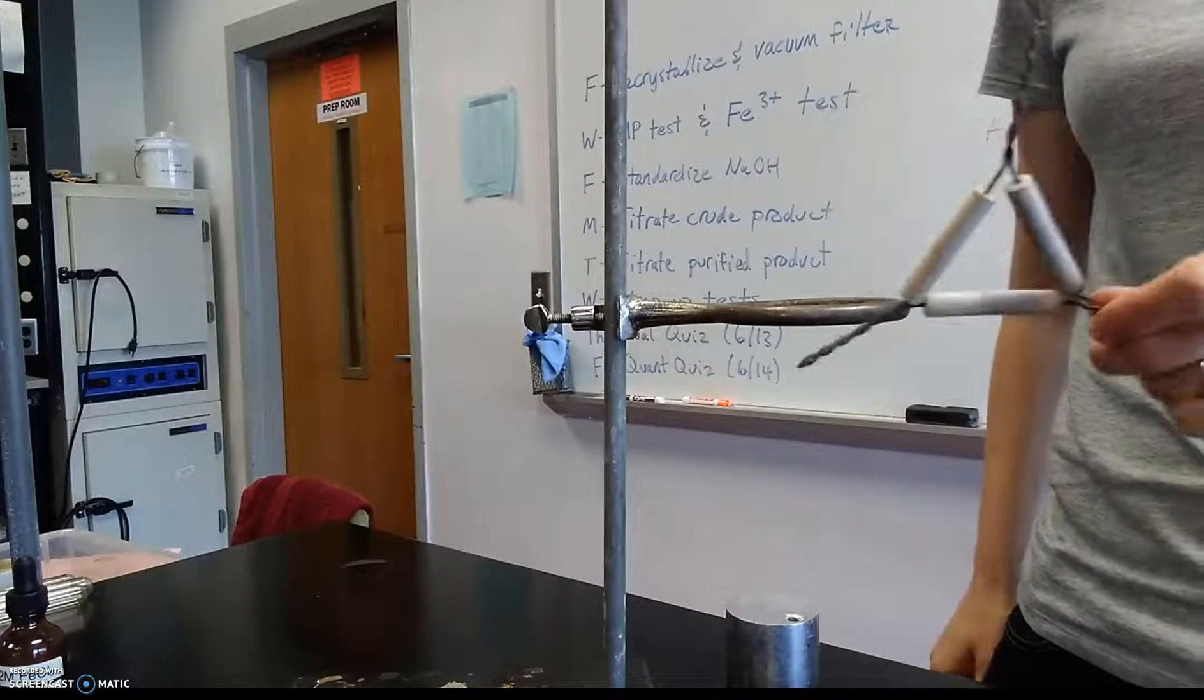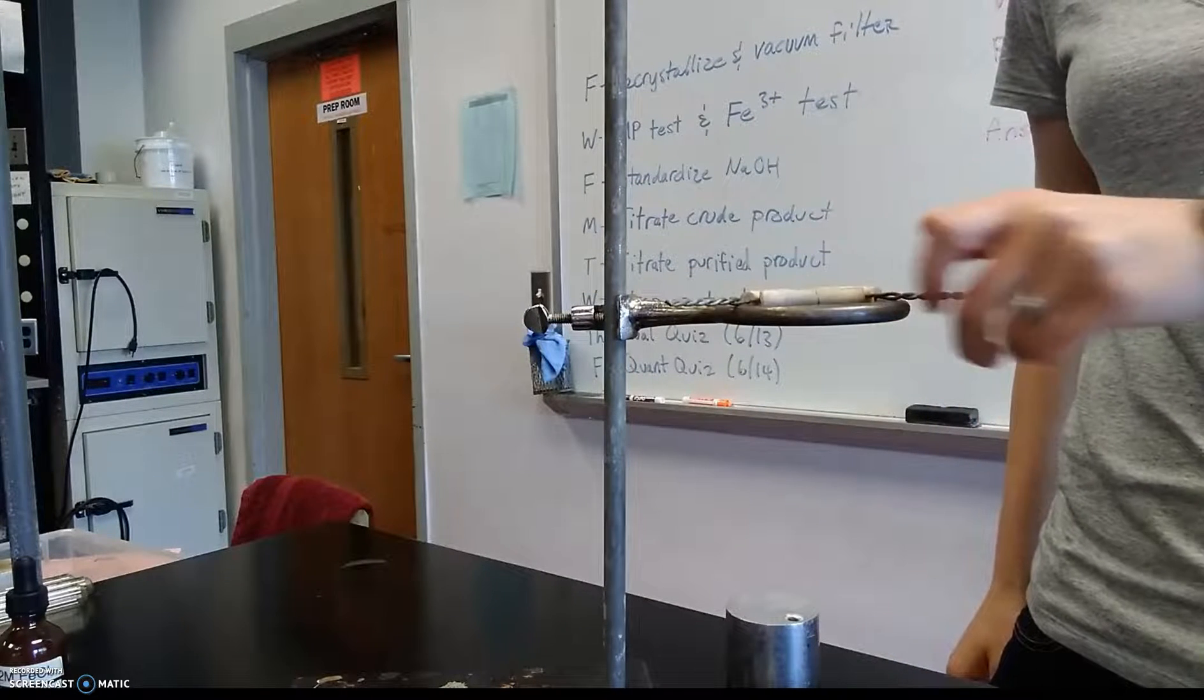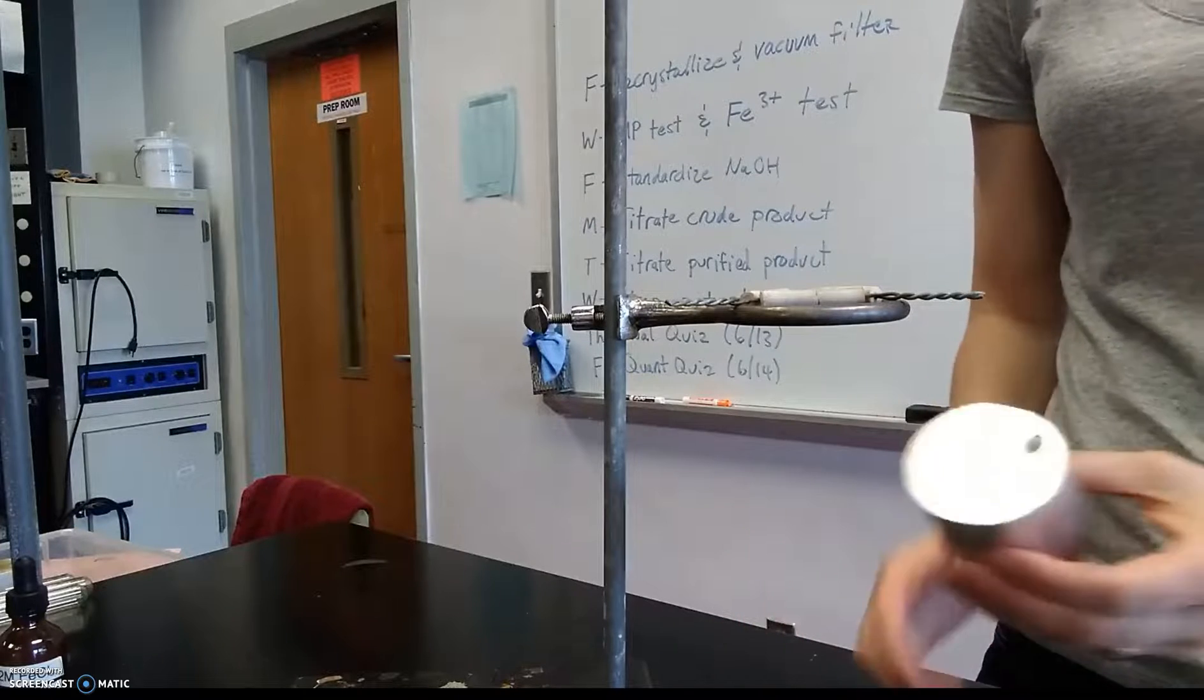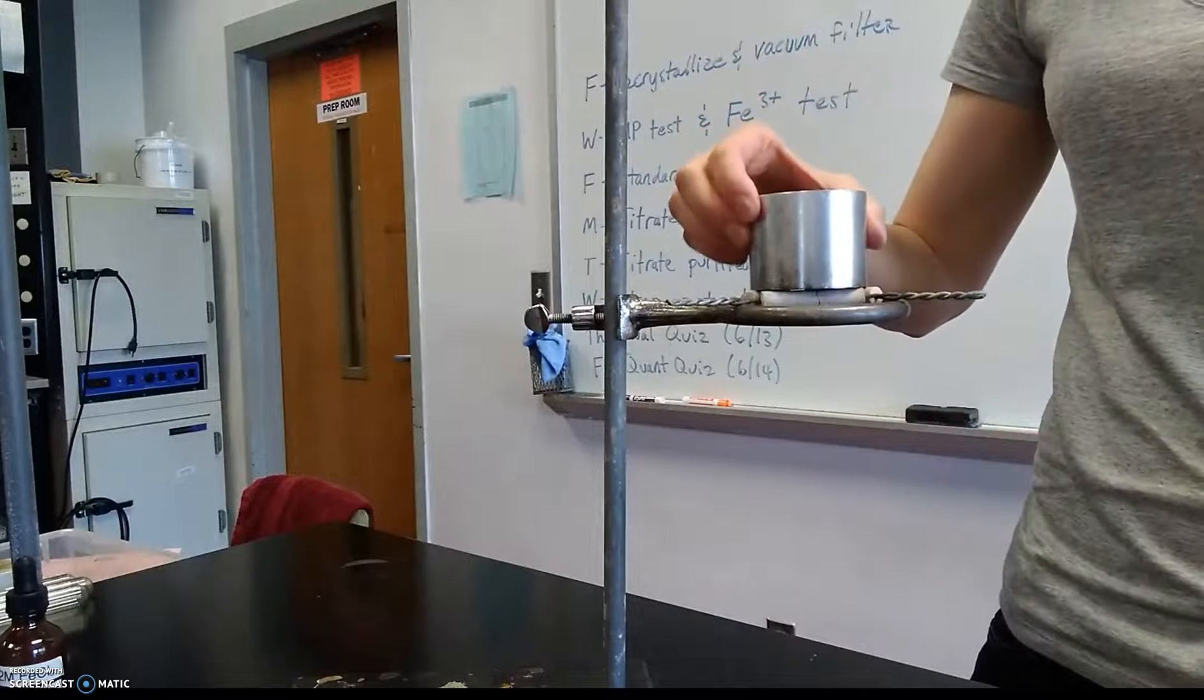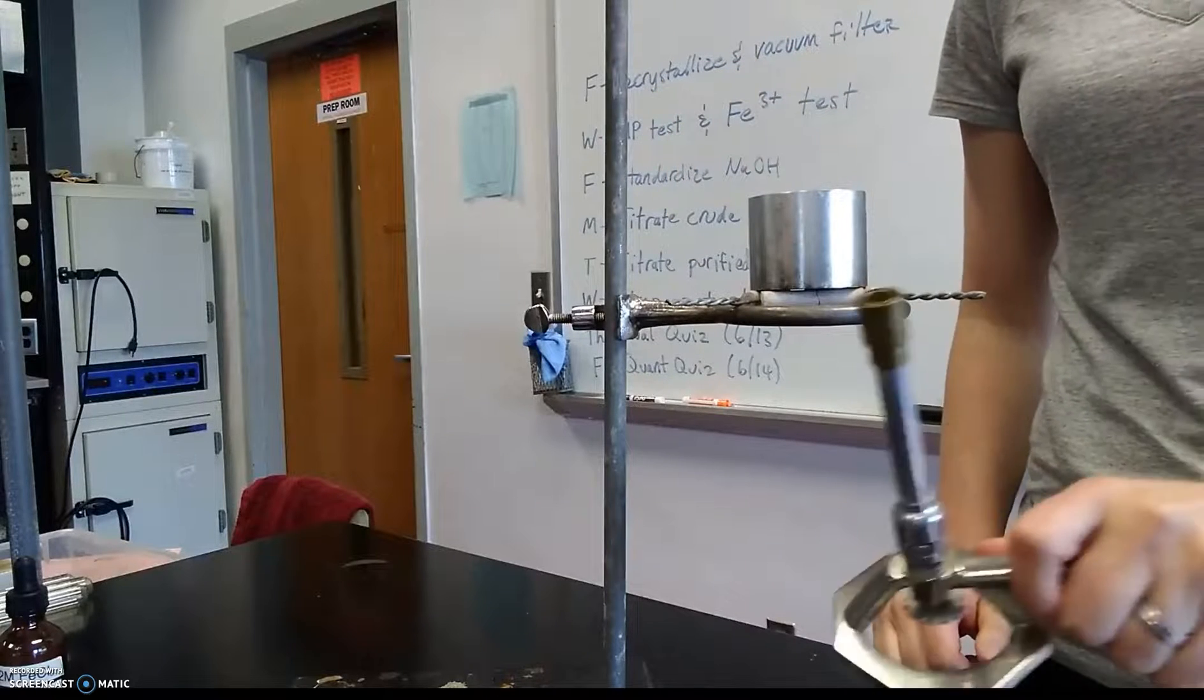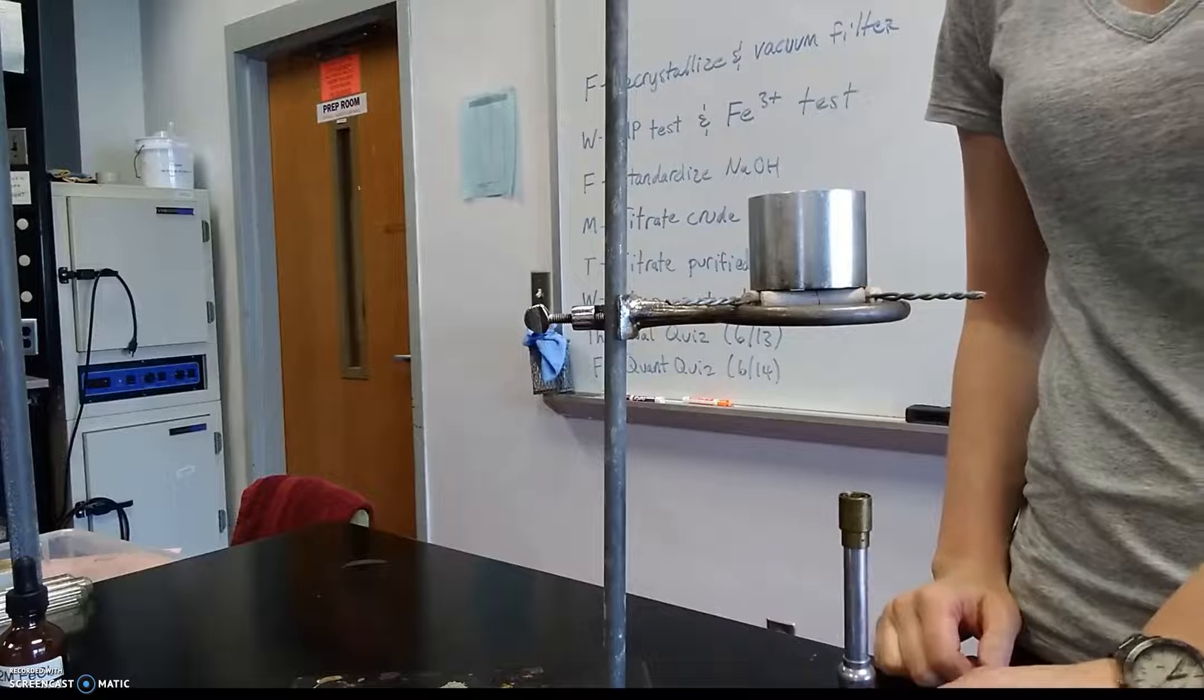So when you go to set it up make sure that the large ring is on your ring stand and that it's opposite the base of the ring, otherwise it's going to be unstable and fall over. You're going to put your clay triangle on top of the large ring. We've got this aluminum cylinder, it's got a hole on one side nothing on the bottom. We're going to put it with the hole side up.